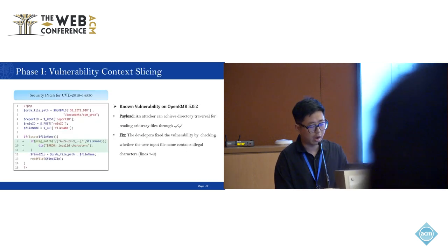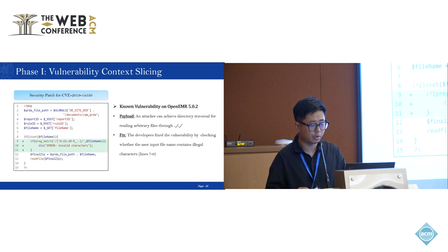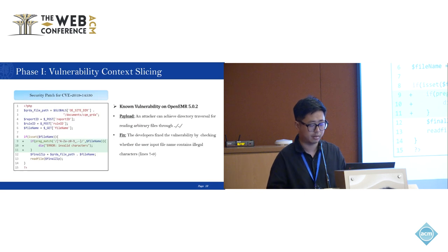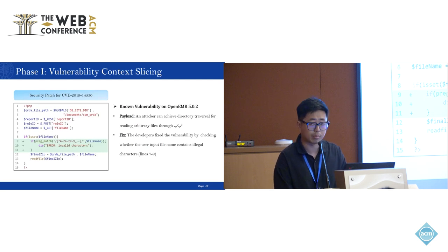Next, we will show how Rikerscan detects vulnerabilities using a real-world example. This slide shows a security patch for a real vulnerability in OpenEMR. Due to improper checks on user-controlled file names, an attacker can achieve arbitrary file reading by carefully constructing a payload. Rikerscan will treat this vulnerability as a known vulnerability to detect recurring vulnerabilities in the target application. In the first phase, Rikerscan will locate the sources and sinks of the known vulnerability by analyzing the patch and remove irrelevant code from the code snippet.